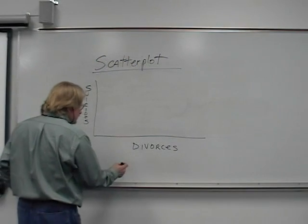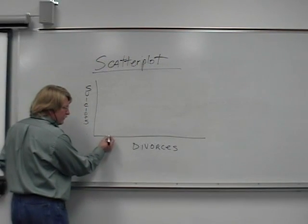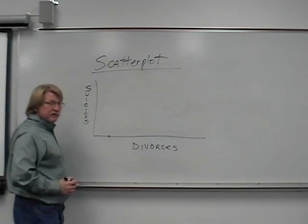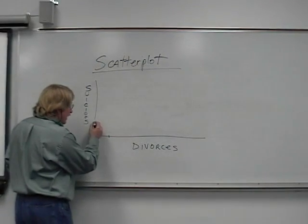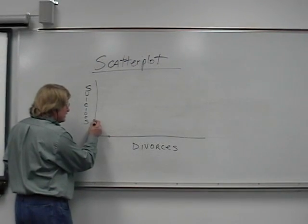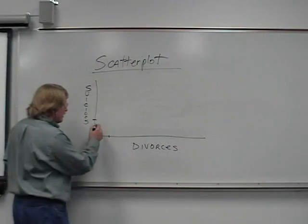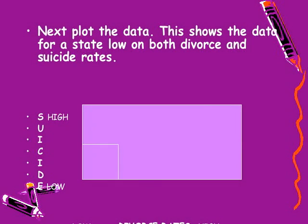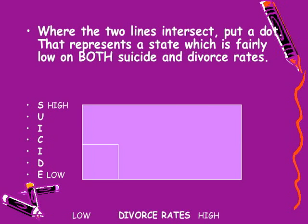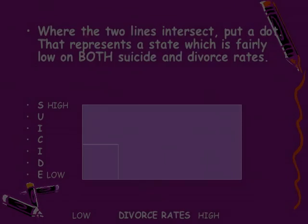When we look at divorces, we'll find some state that has a relatively low divorce rate, and we'll find that its suicide rate is relatively low. We take those two lines and crisscross them, and that gives us a dot. That dot represents a state's measure on both the variables of divorce and suicide.